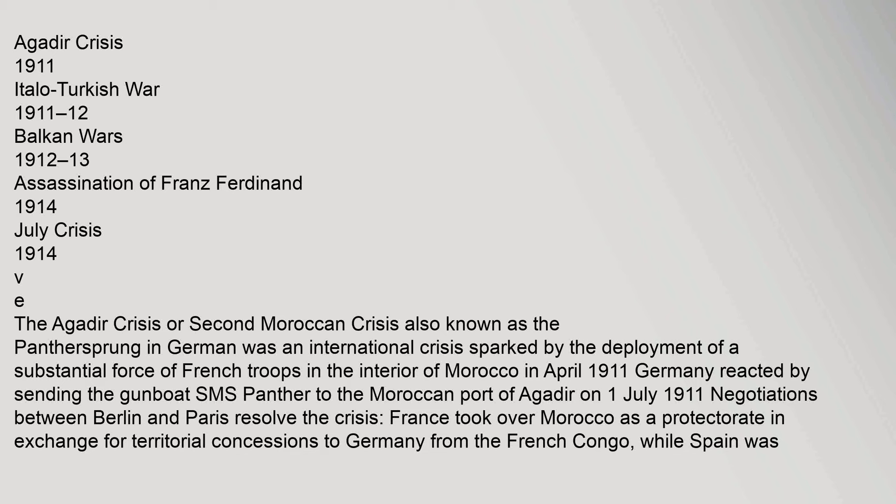The Agadir Crisis, or Second Moroccan Crisis, also known as the Panthersprung in German, was an international crisis sparked by the deployment of a substantial force of French troops in the interior of Morocco in April 1911. Germany reacted by sending the gunboat SMS Panther.